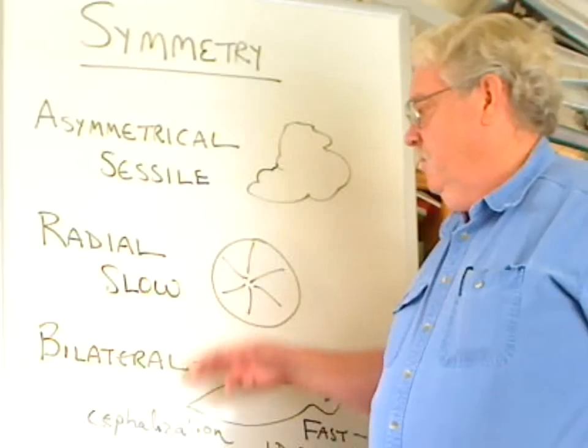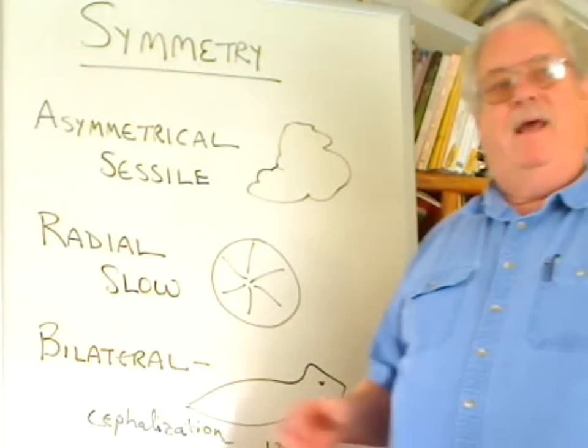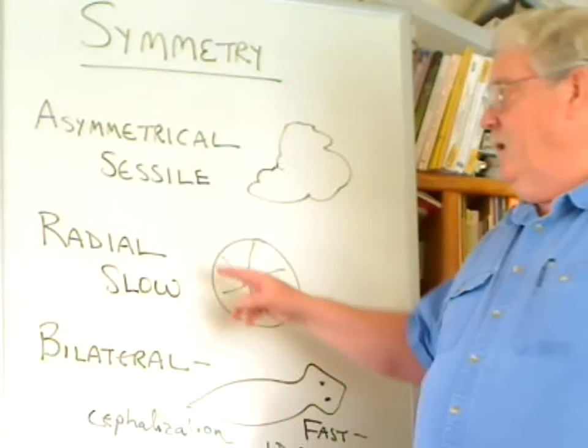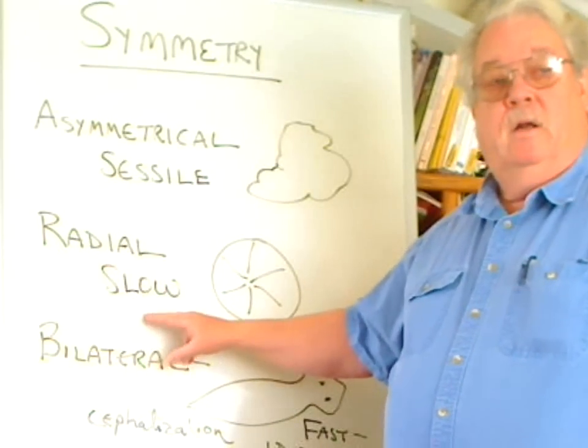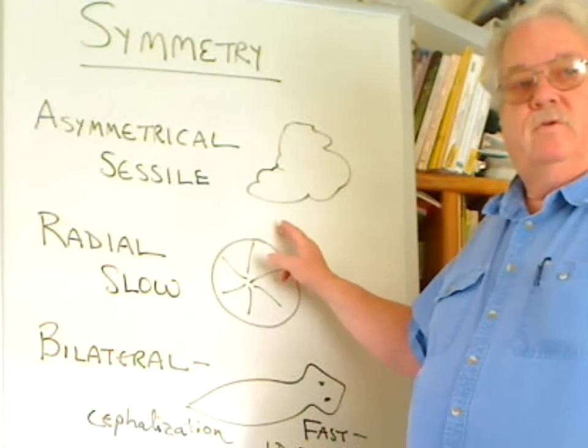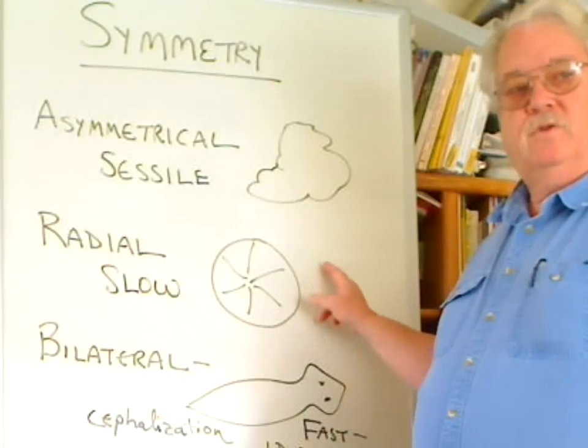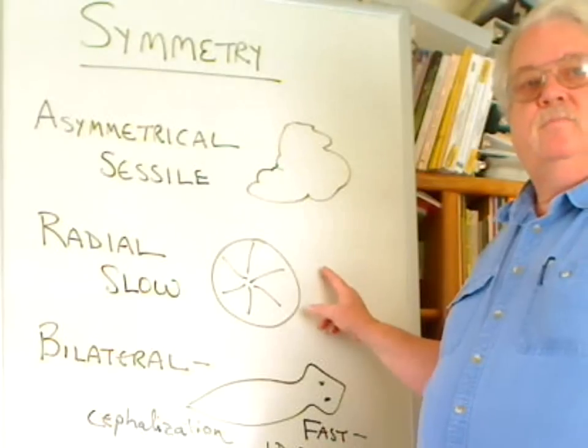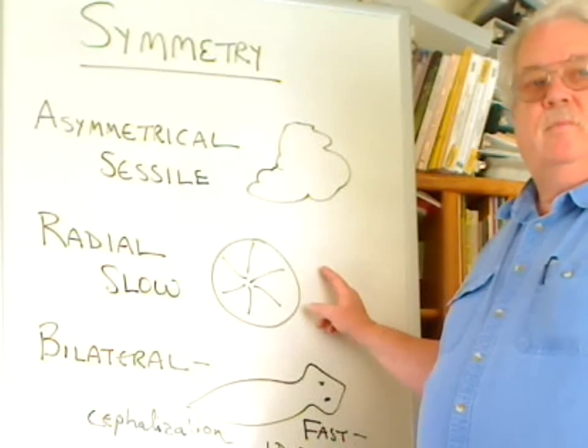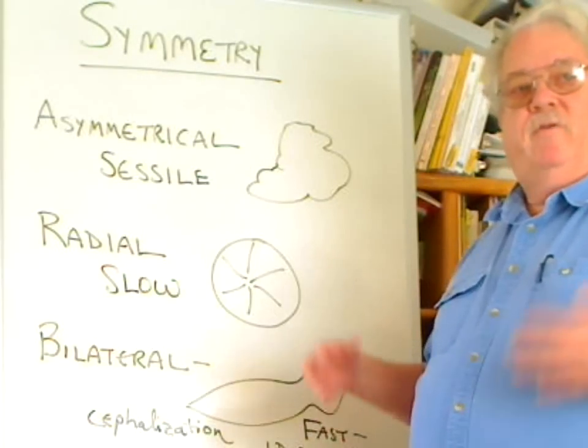With radial and bilateral symmetry, we have movement involved. Typically, radially symmetrical organisms are relatively slow. Things like the medusa of jellyfish, things like starfish, sand dollars, very slow moving. They do not have to be streamlined.